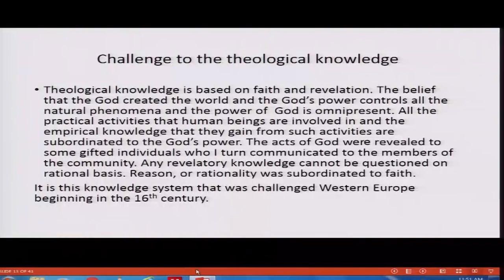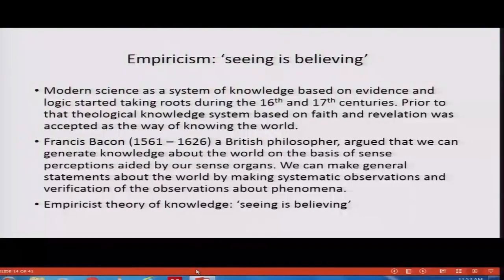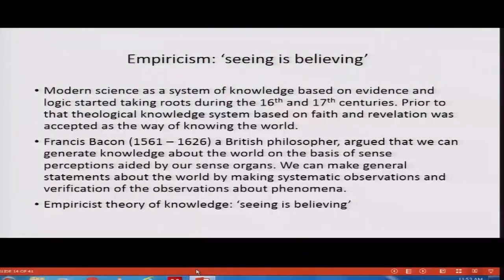It is this knowledge system that was challenged in Western Europe beginning in the 16th century. Empiricism — modern science as a system of knowledge based on evidence and logic — started taking roots during the 16th and 17th centuries in Europe. Prior to that, the theological knowledge system based on faith and revelation was the accepted way of knowing the world. Francis Bacon, a British philosopher who lived in the 16th century, argued that we can generate knowledge about the world on the basis of sense perceptions aided by our sense organs — making systematic observations and verification of these observations about phenomena.